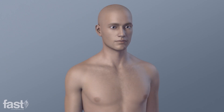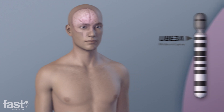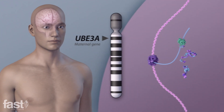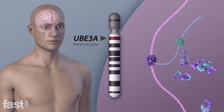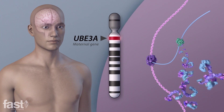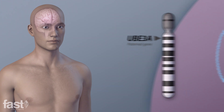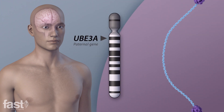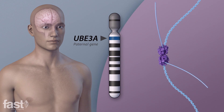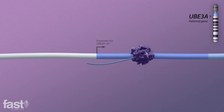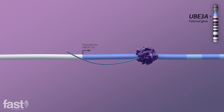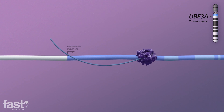In our central nervous system, only our mother's copy of the UBE3A gene is expressed or active. The copy inherited from our father is silenced by a mechanism called the antisense transcript, where neurons manufacture a strand